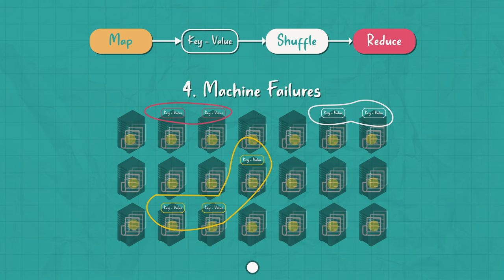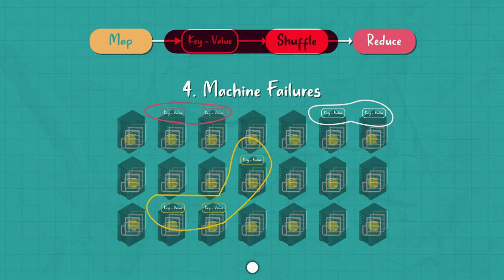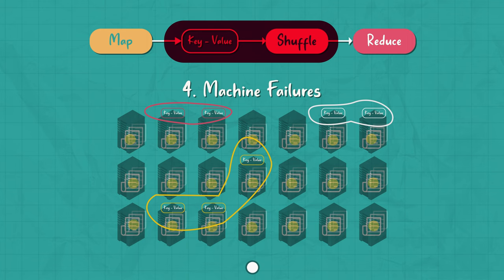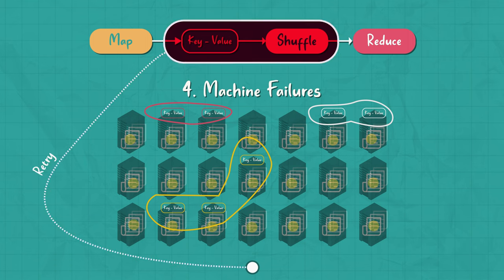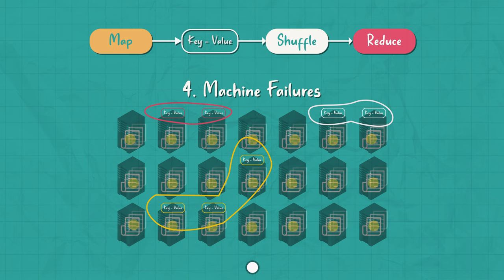The fourth thing to note is how the model handles machine failures or network partitions. To handle failures, the MapReduce model basically re-performs the map operations or the reduce operations when the failure occurs. The central controller will just re-perform this operation and then move on to the reduce step. This can happen only if the map and reduce functions are idempotent. That is, if you repeat the map or reduce function multiple times, the output doesn't change. The outcome doesn't change regardless of how many times you repeat the function. So idempotency is a requirement in the MapReduce model.